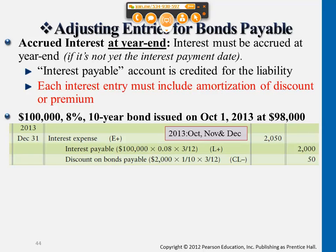Earlier cases assumed we're paying off the interest at year end, which coincidentally is both the financial statement date and the pay date for the bond. At that time we would just credit cash and credit discount on bonds payable for six months. This case is different — we only accrue interest for three months, and since it's not the pay date yet, it's considered interest payable for three months.